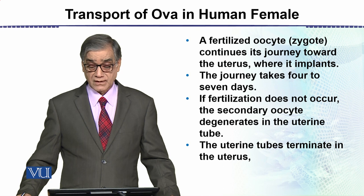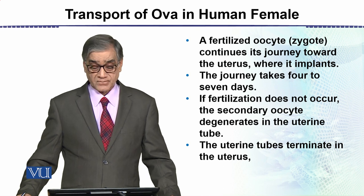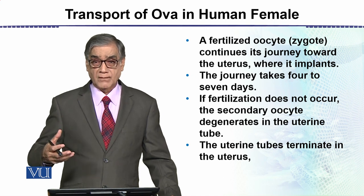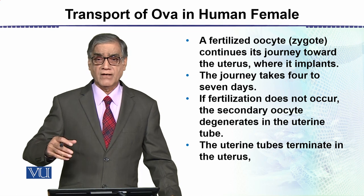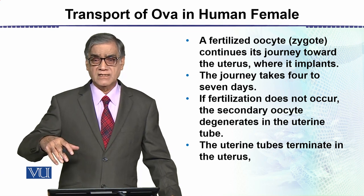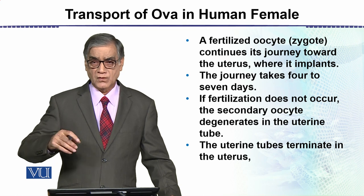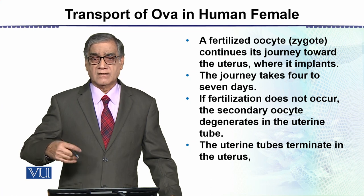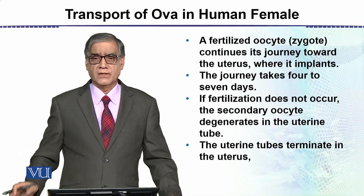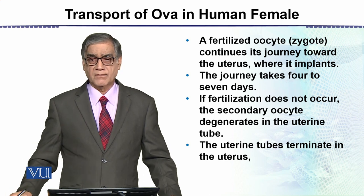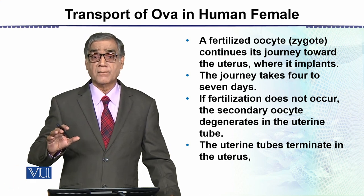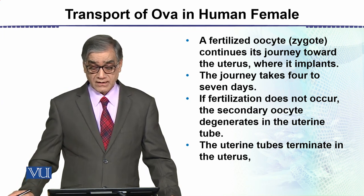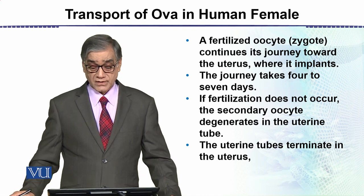That is the point where fertilization occurs. A fertilized oocyte — also called a zygote — continues its journey towards the uterus where it implants in the endometrium. At that time, the endometrium is in a position where it has been shed and is now beginning to develop again, and the implanted ovum embeds into the uterine wall.